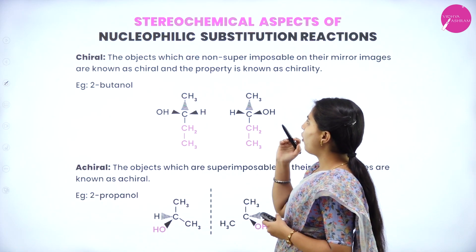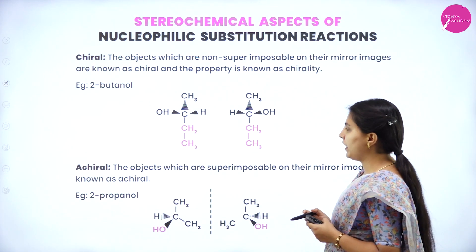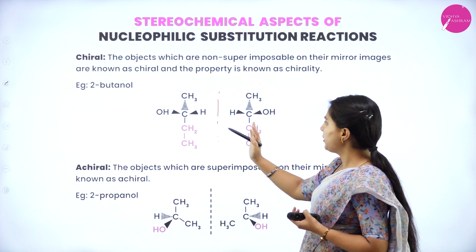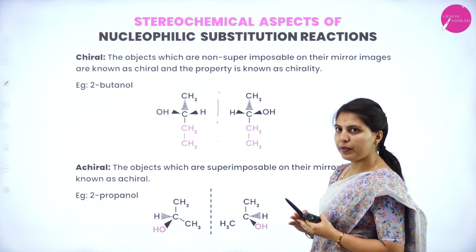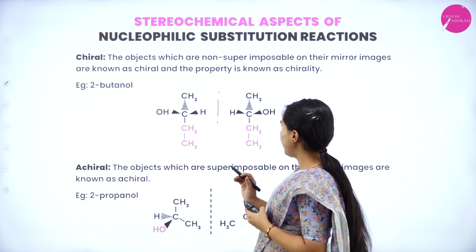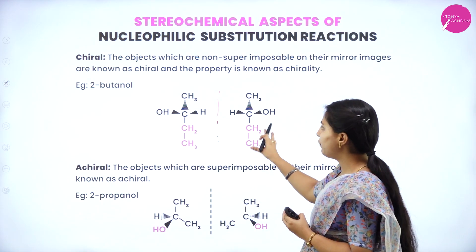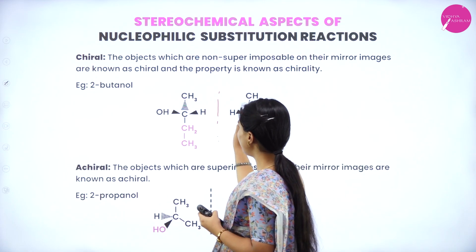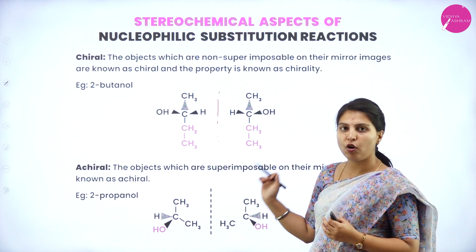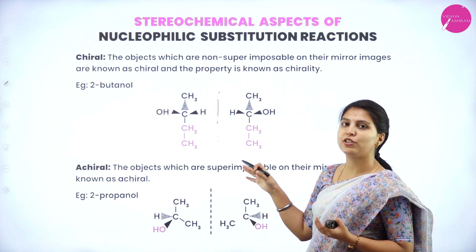Chiral: objects which are non-superimposable on their mirror images are known as chiral, and the property is known as chirality. Consider two compounds of 2-butanol — one and its mirror image. Superimposable means you take one and place it on the other compound in the correct position; H should fall on H. But here it will not superimpose because H will fall on OH and OH will fall on H. These kinds of compounds are called chiral compounds.